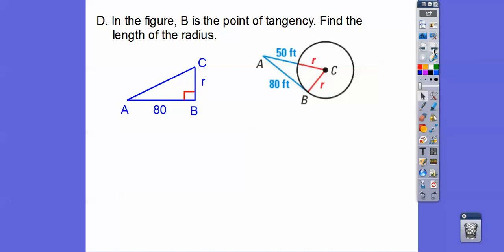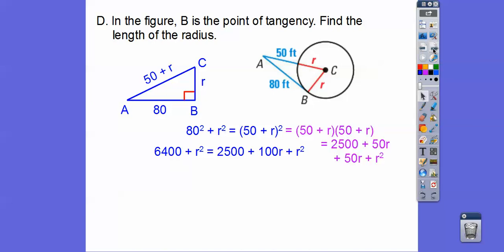That's right, so here we go. We're going to set up the Pythagorean theorem, and what's this length right here? This length is this one plus this one. It's 50 plus R. So we'll use the Pythagorean theorem, and then square them up, and then my students are going to ask, where'd that 100R come from?